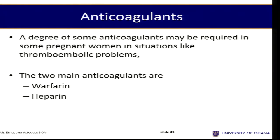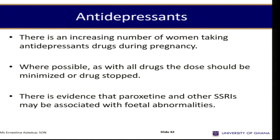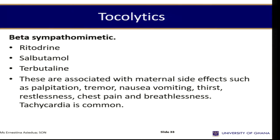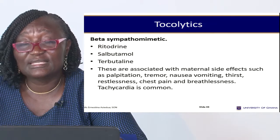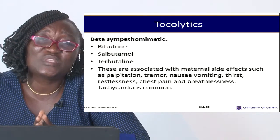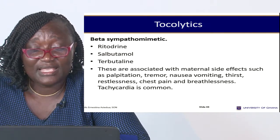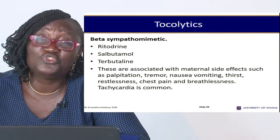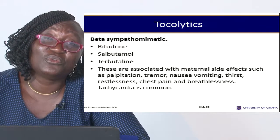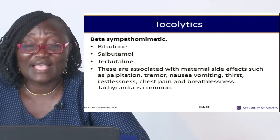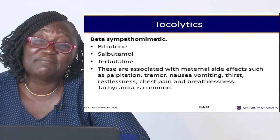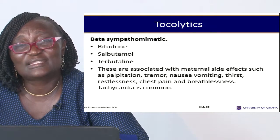Anticoagulants: the two main ones are warfarin and heparin, but heparin is sometimes preferable in pregnancy. Tocolytics reduce uterine activity and cause relaxation of the uterus. They are used when a woman is not yet at term but is having premature uterine contractions. A drug like salbutamol (Ventolin), normally used for asthma to dilate the bronchioles, has also been found very useful in obstetrics as a tocolytic — it relaxes uterine muscles and prevents further contractions.